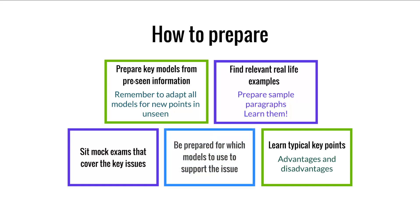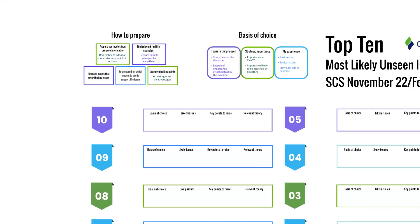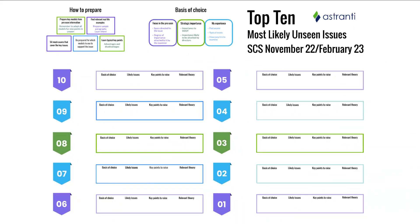Finally, think about which models to use to support each issue. If there is going to be a question on strategic options, have you looked at the suitability, acceptability, and feasibility model? Have you looked at the Ansoff matrix? Those are the key tips for preparing with regards to the most likely issues. On that note, we'll now start by looking at our top 10 most likely issues, starting with number 10.